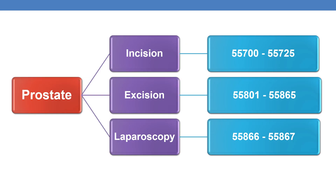First, coming to CPTs for prostate. The prostate is again subcategorized into incision, excision, and laparoscopy. The incision CPTs for prostate are 55700 to 55725. Excision CPTs come in the range 55801 to 55865, and laparoscopy of prostate CPTs come in the range 55866 to 55867 — only two CPTs, 866 and 867.